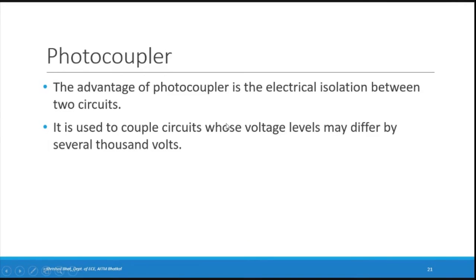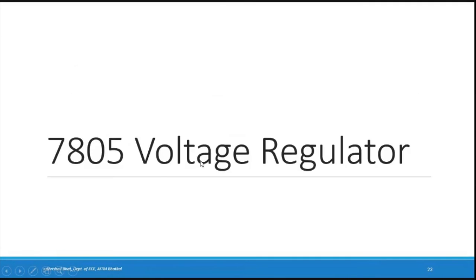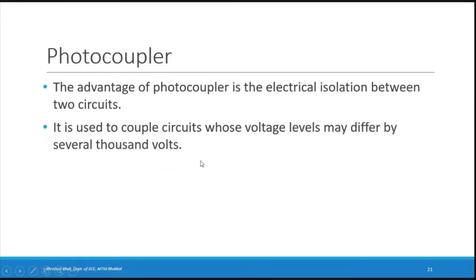The advantage of a photo coupler is electrical isolation between two circuits. It is used to couple circuits whose voltage levels may differ by several thousand volts. The circuits are still connected, but through light rather than direct electrical connection.